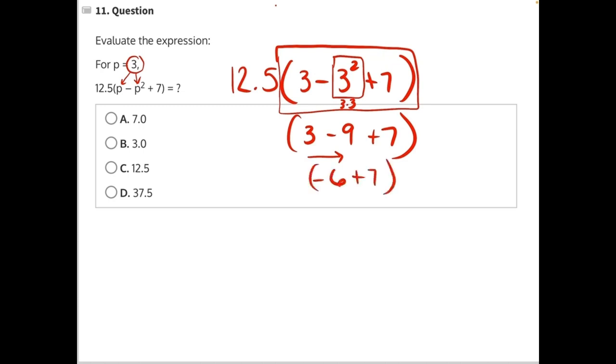And now we can do the last step, negative 6 plus 7. Adding a negative is the same as subtracting a positive, so you can flip this if it's easier. 7 minus 6 will give us a positive 1.